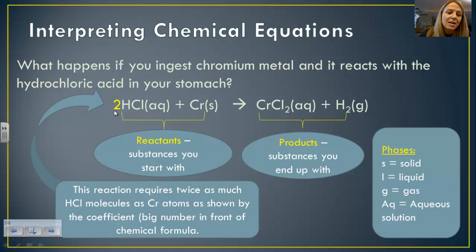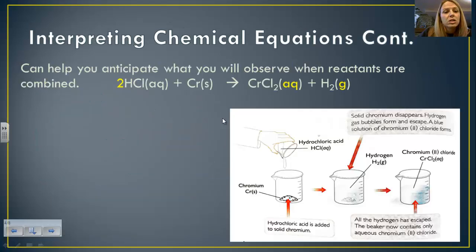You will also notice that sometimes there are large numbers in front of the formulas, and those are put there when we start to balance out equations. But what this is saying here is that it requires twice as much hydrochloric acid than it does chromium atoms for this reaction to occur to its fullest.